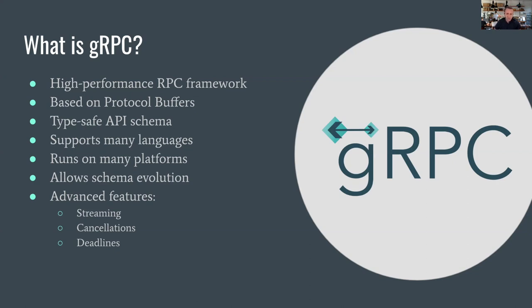In terms of advanced features, gRPC supports everything you'd want out of the box. There are three types of streaming: server streaming, client streaming data to the server, and bidirectional streaming where both the client and server stream simultaneously. There are cancellations and deadlines — where the client tells the server when it sends the request that the server has, say, one second to respond, and the server does its best and cancels on its own if it cannot meet that deadline.